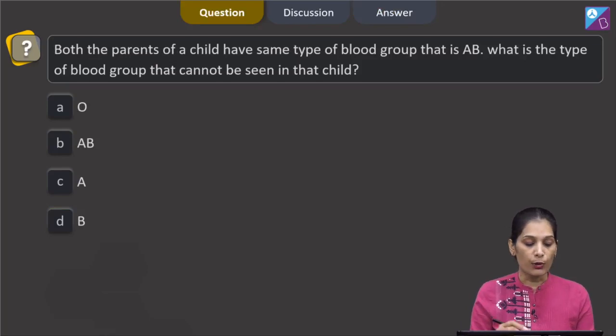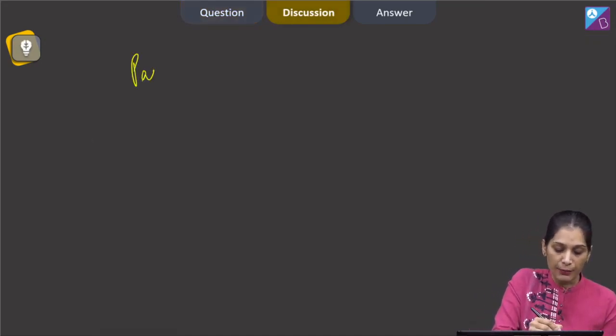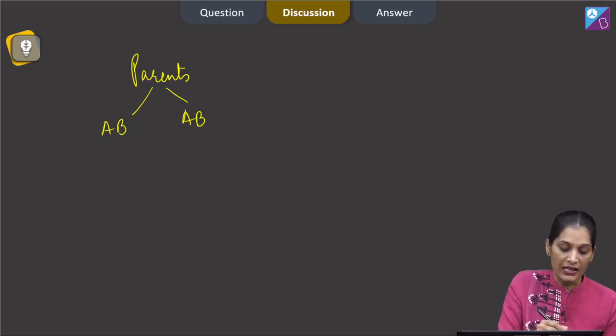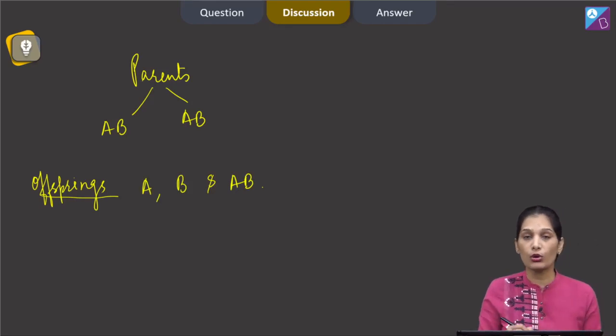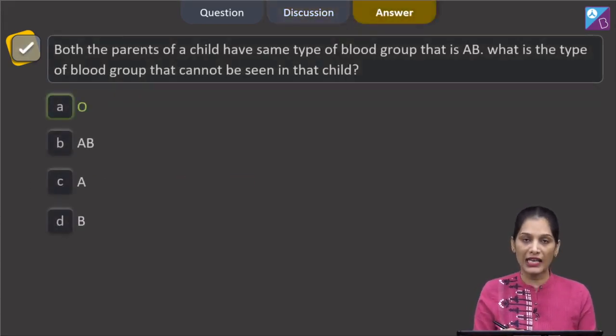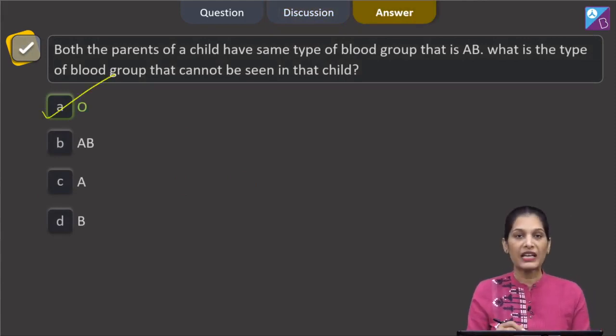Next question says that both the parents of a child have same type of blood group that is AB. What is the type of blood group that cannot be seen in that child? If we see that parents have the same type of blood group that is AB and AB, so in this condition we can see that offsprings can have blood group A, B and AB, but not O type of blood group as both the parents do not carry the allele for O type of blood group. So, the correct option for the given question is option A which says O type of blood group. Let's pick up the next question.